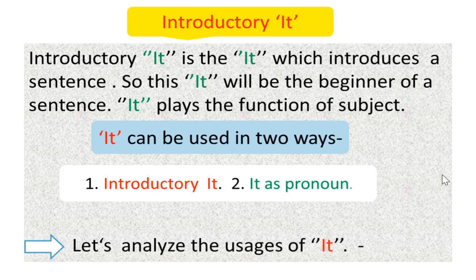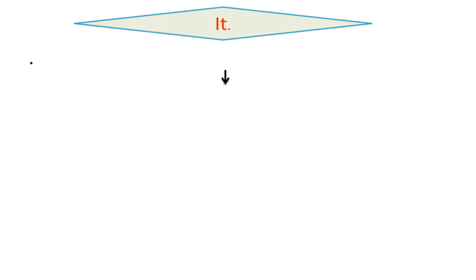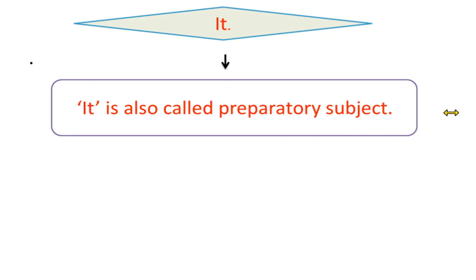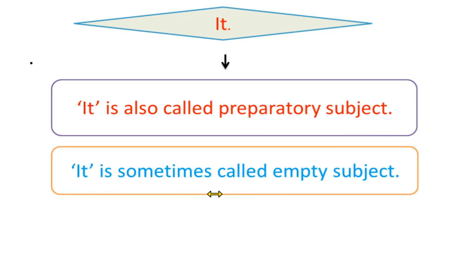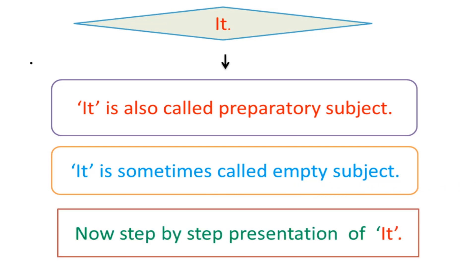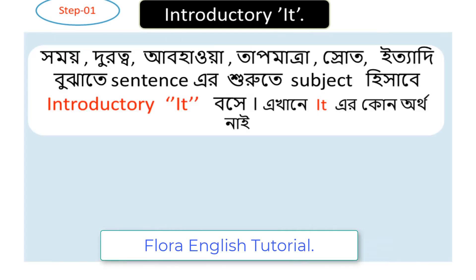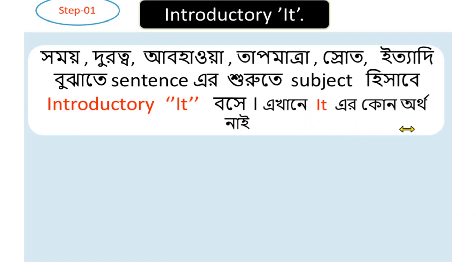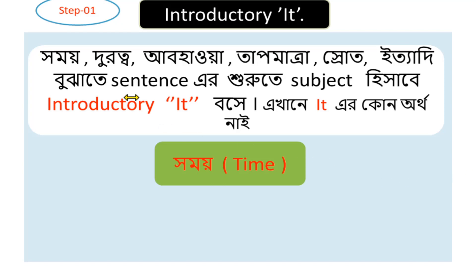Let's analyze the uses of 'it'. It is also called preparatory subject, and it is sometimes called empty subject. It functions to complete the role of the subject in a sentence. We will now go through each use separately.